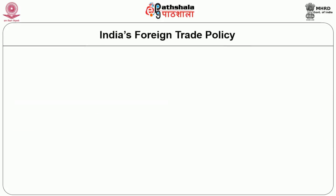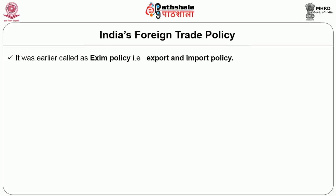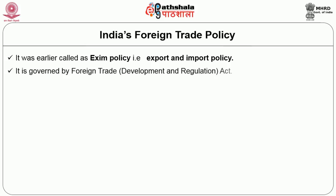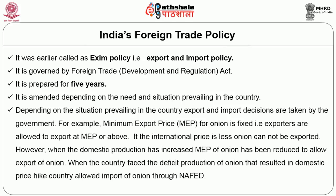India's foreign trade policy was earlier called Exim policy, that is export-import policy. It is governed by the Foreign Trade Development and Regulation Act, and it is prepared for 5 years. Whenever necessary, depending upon the situation prevailing in the country, it is amended within the 5-year period. For example, minimum export price for onion is fixed. The price of onion fluctuates depending upon the production in the country. Hence, the government, in order to protect the farmers, fixed a minimum export price — MEP — for onion. Exporters are allowed to export at MEP or above.